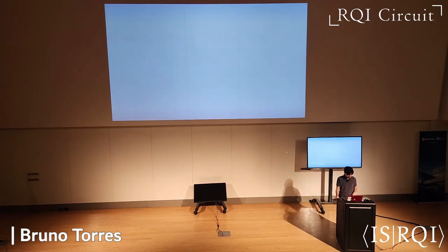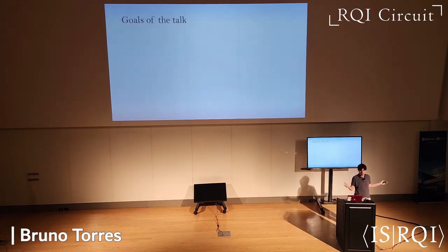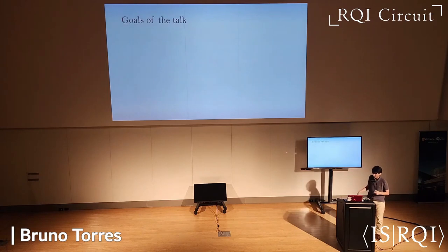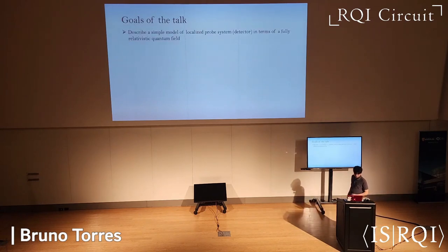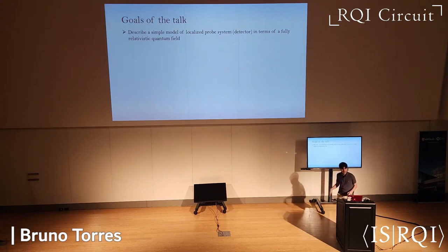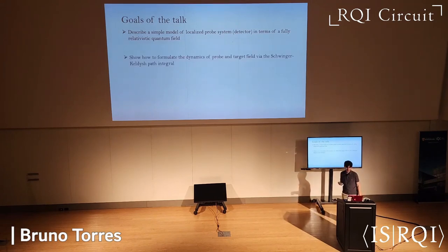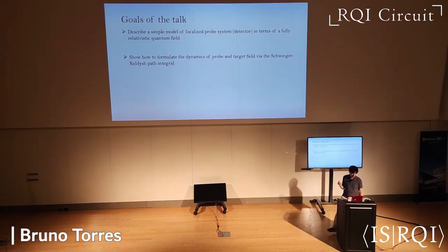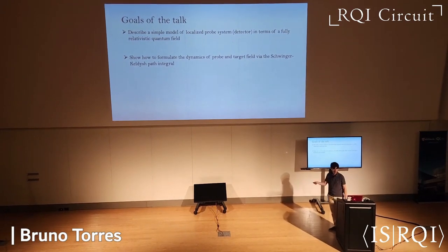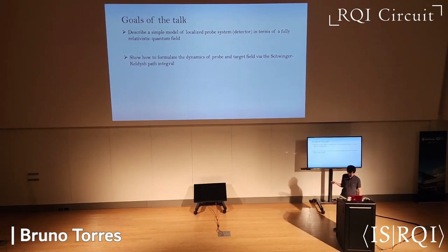The goal of the talk is to reconcile these two points of view. I'm going to describe a simple model of a localized probe in terms of a fully relativistic quantum field — this basically mimics the first paper I mentioned with Jose, Tales, and Eduardo — and show how to formulate the dynamics of the probe and target field, where the target field is the one I'm trying to extract information from, via the path integral technique, more specifically the Schwinger-Keldysh path integral.